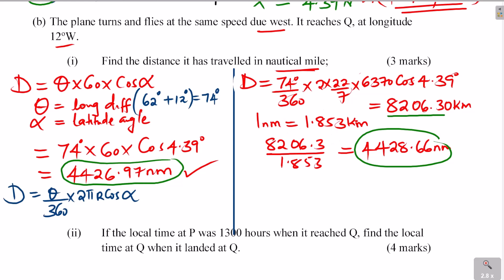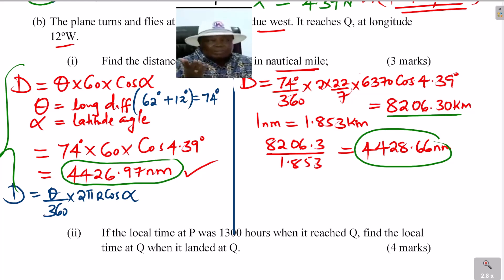The small difference between the two results is due to the estimation made during calculation. The easiest method is to directly calculate in nautical miles using θ × 60 × cos(α), or you can calculate in kilometers and convert. Now let's go to the last part, question B2.